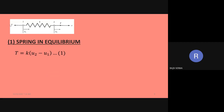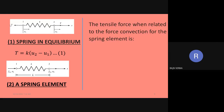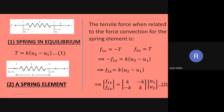To derive the stiffness equations, we start from strength of materials theory. The deformation of the spring is given by delta, which equals U2 minus U1. Multiplying this deformation by the spring stiffness gives the tension T. So equation 1 is T equals K times (U2 minus U1). Then, since the FEM force at node 1 is opposite to the tension direction, F1x equals minus T, and at node 2, F2x equals T.